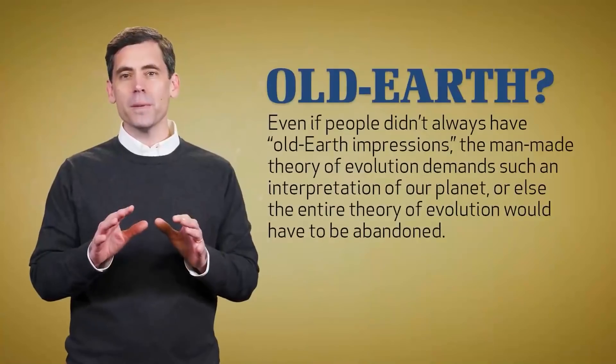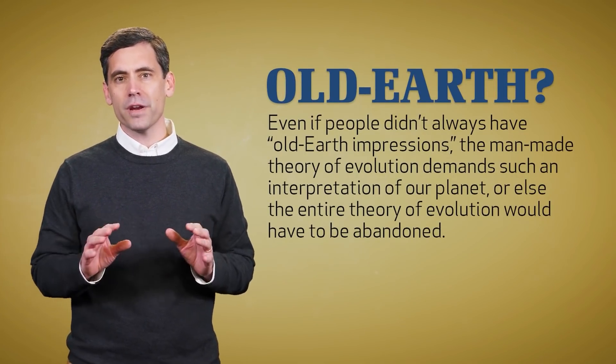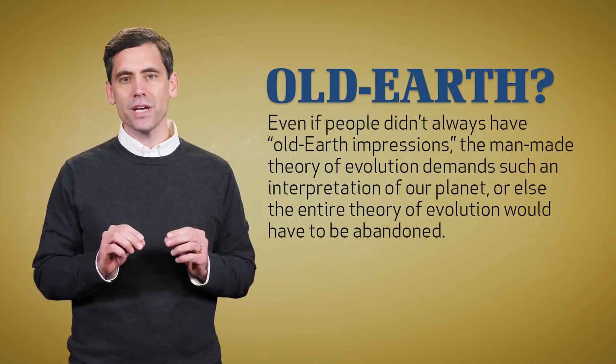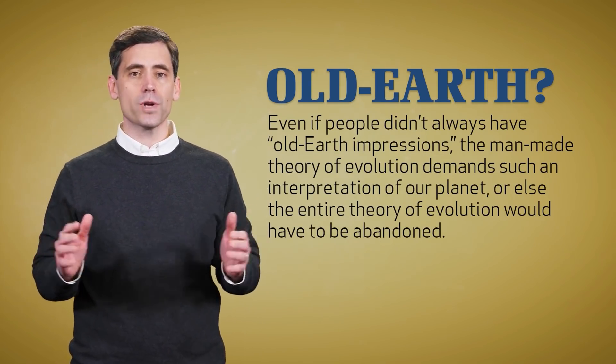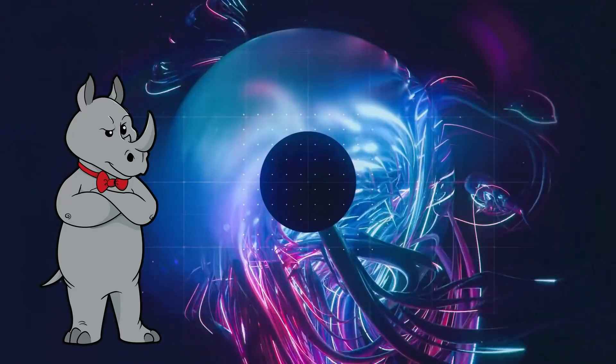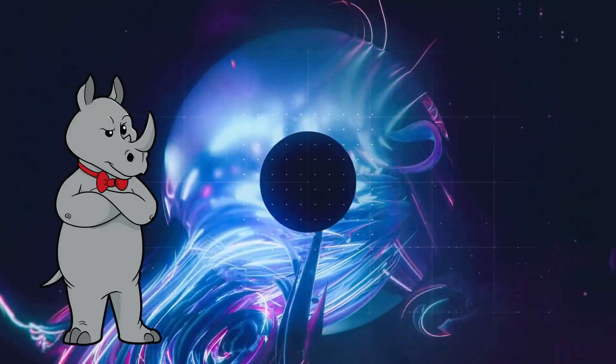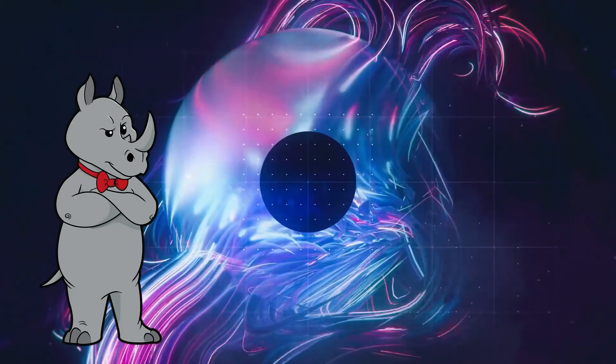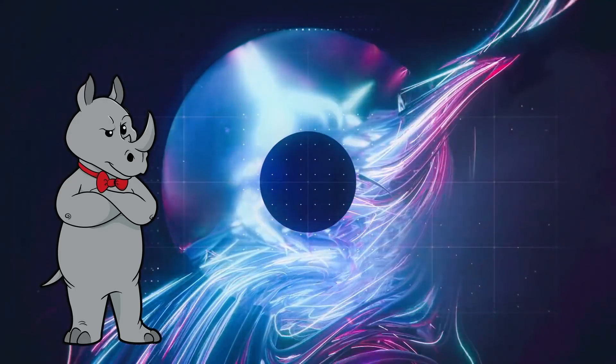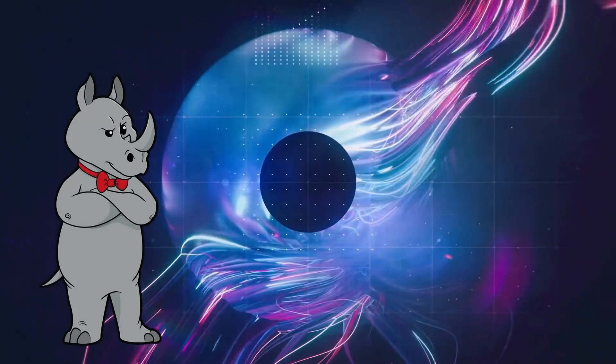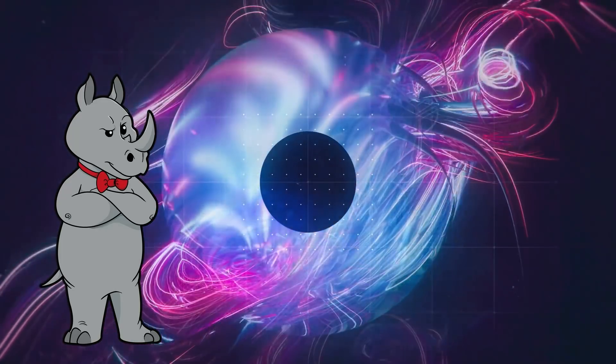First, even if people didn't always have old earth impressions, the manmade theory of evolution demands such an interpretation of our planet, else the entire theory of evolution would have to be abandoned. I mean, yes, evolution does take time. But our discovery of the fact that enough time has passed for evolution to have occurred was made before Darwin was even born. It's not like he came up with evolution and then deep time sprung up as a concept to bolster the theory which we had already decided should replace creationism.